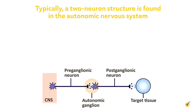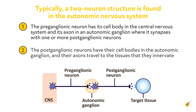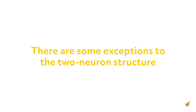Typically, a two-neuron structure is found in the autonomic nervous system. That is, the preganglionic neuron has its cell body in the central nervous system and its axon in an autonomic ganglion where it synapses with one or more postganglionic neurons. The postganglionic neurons have their cell bodies in the autonomic ganglion, and their axons travel to the tissues that they innervate. There are some exceptions to the two-neuron structure.